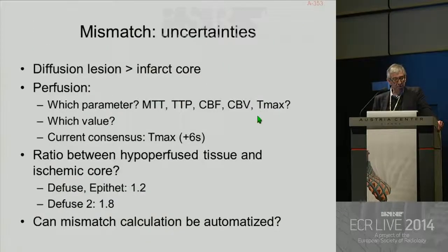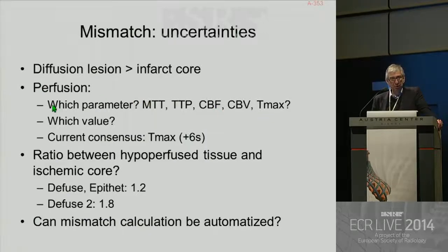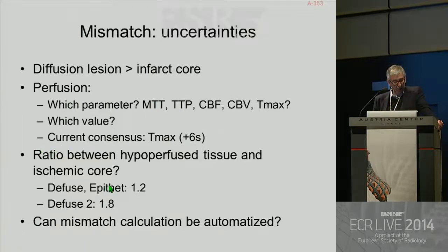In fact, it's not so simple. Probably the diffusion lesion is not exactly the infarct core, and the diffusion lesion can partially regress after treatment. MRI perfusion is also not simple — we have to determine which parameter to use: MTT, TTP, CBF, CBV, Tmax. The current consensus is for perfusion MRI to use Tmax with a value of six seconds. Also, the ratio between hypoperfused tissue and ischemic core is not well known.